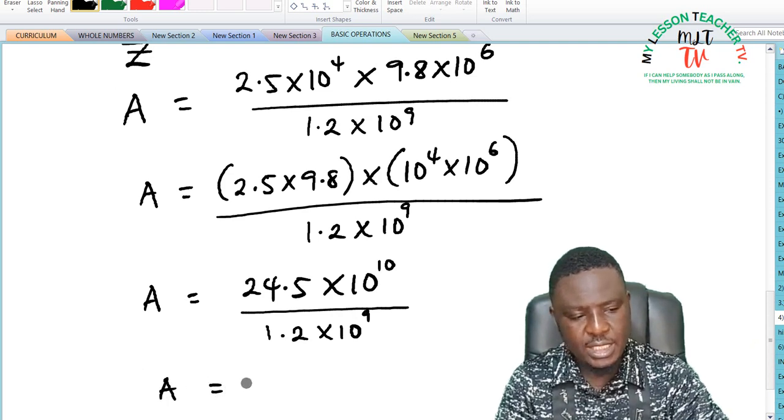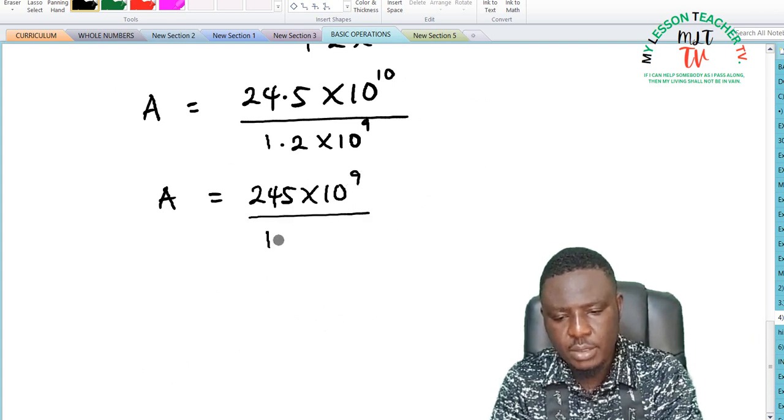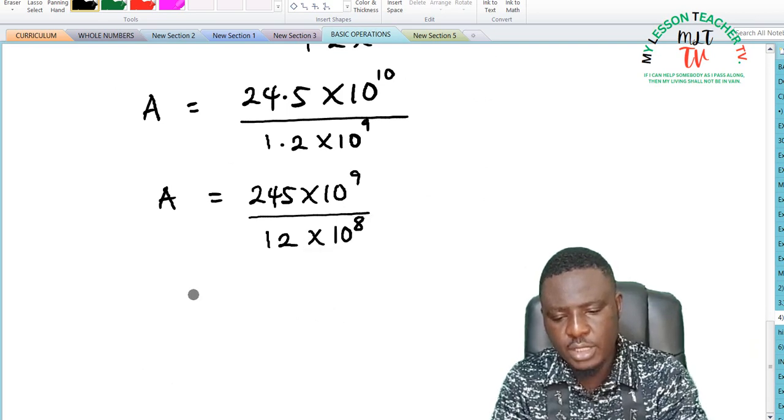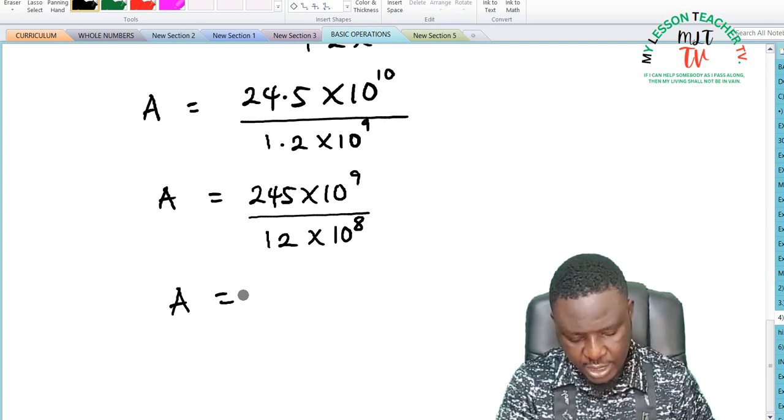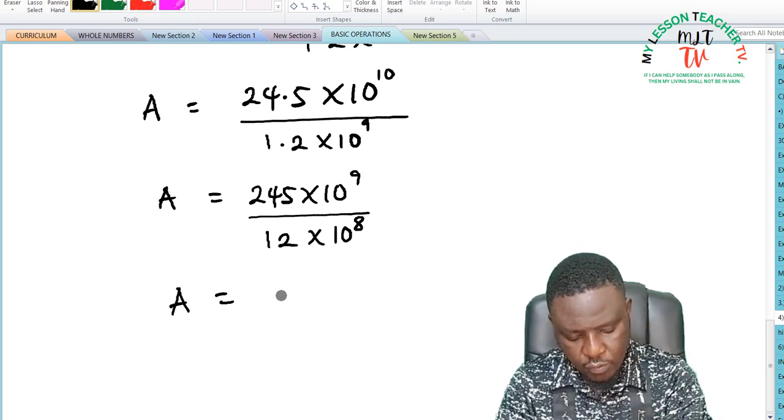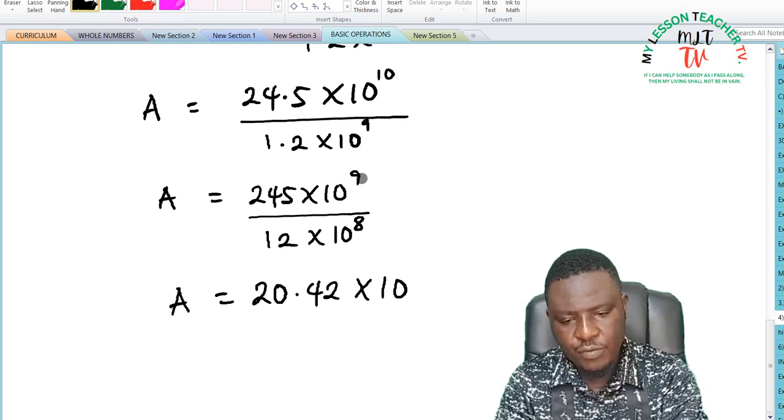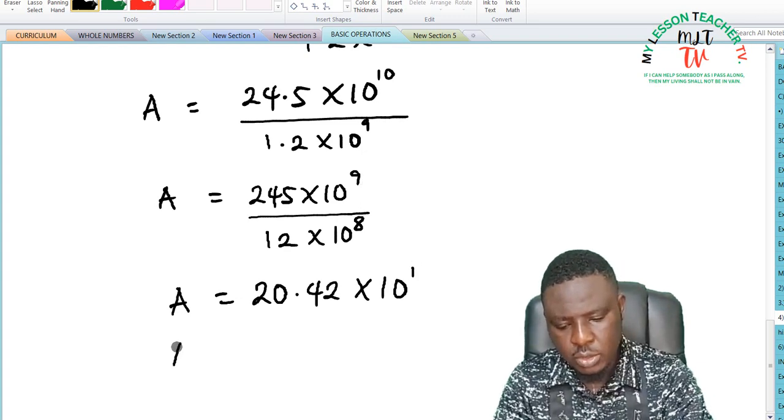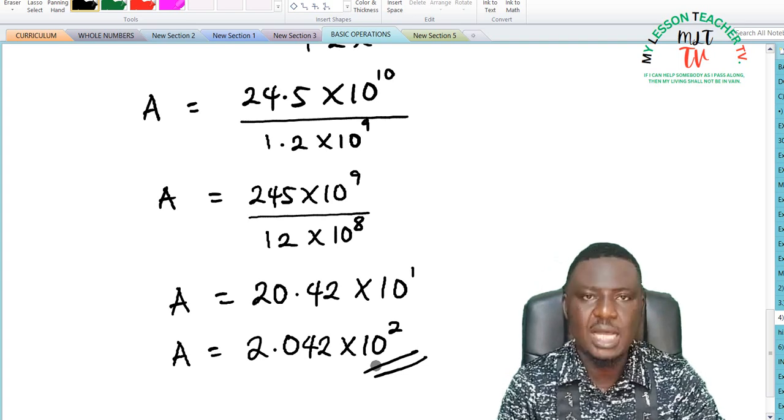So that our value for A is equal to 245 times 10 raised to the power of 9, divided by 12 times 10 raised to the power of 8. A is equal to 245 divided by 12, which equals 20.42. So A in standard form is 2.042 times 10 raised to the power of 2. So this is what you will get as your answer.